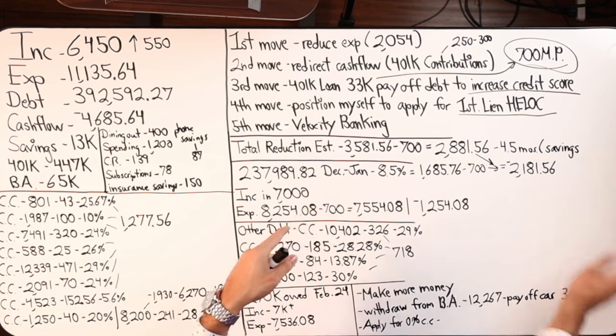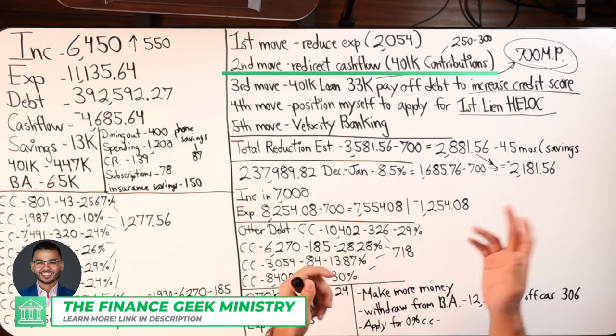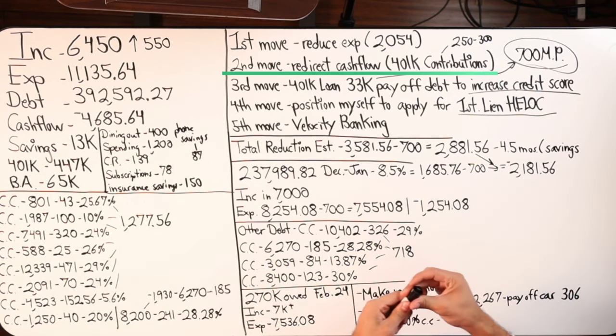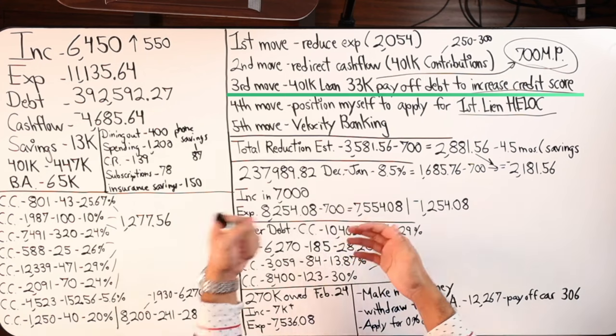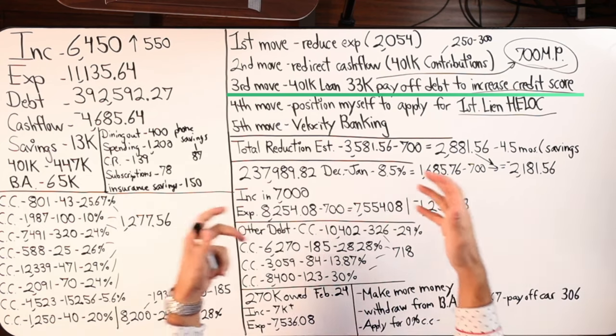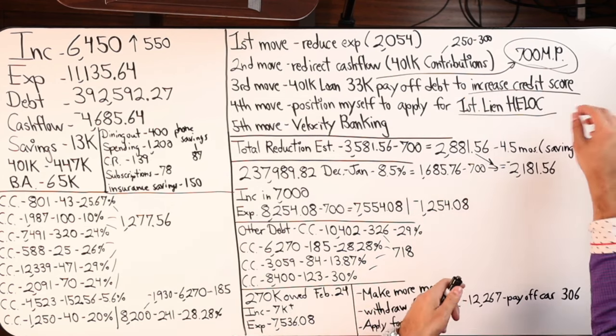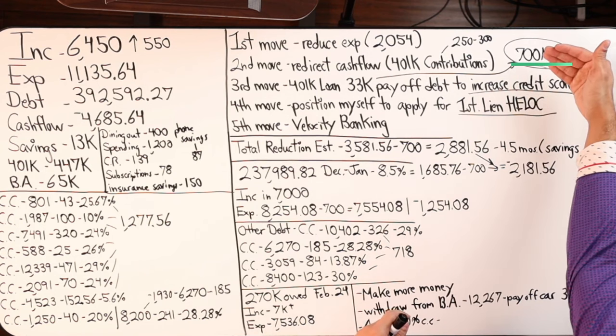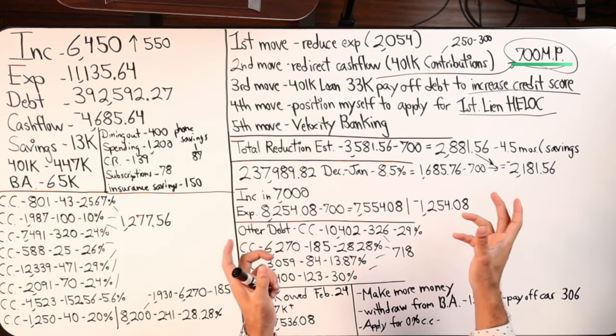Second move, redirecting cash flow. If we completely cut off all 401k contributions, that number might be in the neighborhood of $250, $300. What I estimated, super low. I think it's actually a little bit higher because they're generating like six figures, so that would be a higher number. And then third move, 401k loans, something they already did prior to meeting me. So they got $33,000 to use from their 401k loan, and we're going to allocate that to paying off debt. Instead of increasing credit score, we're paying off debt to increase cash flow. Once they've spent the $33,000, the monthly repayment plan back to the 401k is $700 a month. So whatever we pay off, you have to minus $700, and then you'll see what the net gain would be from that.